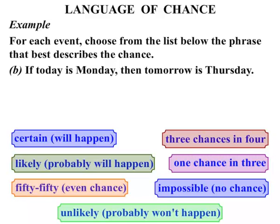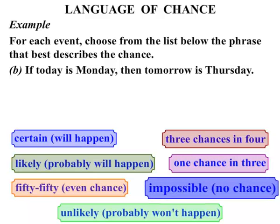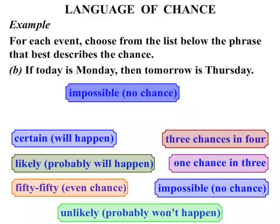What about this one: if today is Monday, then tomorrow is Thursday — what's the chance of that? Well, that's impossible, it's no chance. If today is Monday, obviously tomorrow it has to be Tuesday. It can never be Thursday.